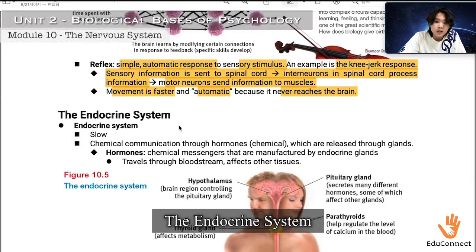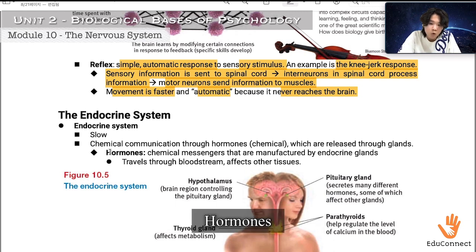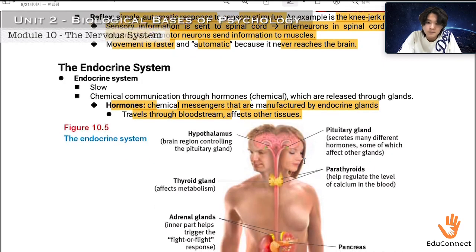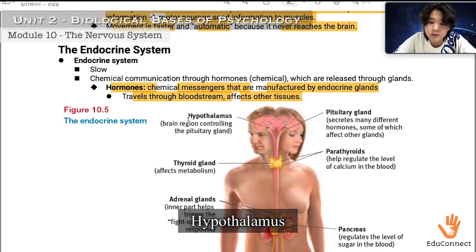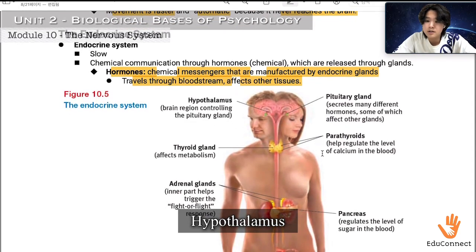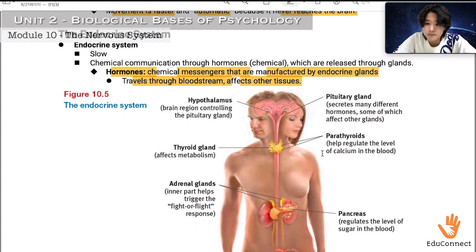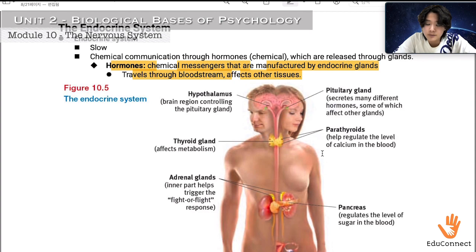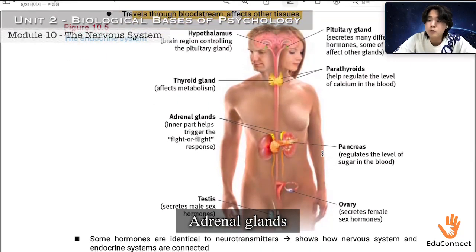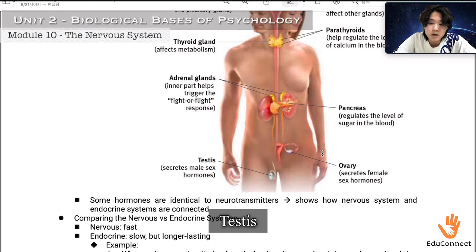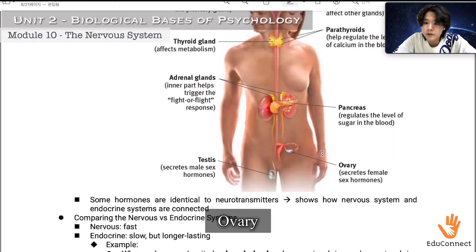Now onto the endocrine system. The endocrine system uses slow, chemical communication through hormones — chemicals released through the bloodstream that affect other tissues. It consists of the hypothalamus, which controls the pituitary gland; the pituitary gland, which secretes many hormones affecting other glands; the thyroid gland, which affects metabolism; the parathyroid, which regulates calcium levels; the adrenal glands, which trigger the fight-or-flight response; the pancreas, which regulates blood sugar; and the testes and ovaries, which secrete sex hormones.